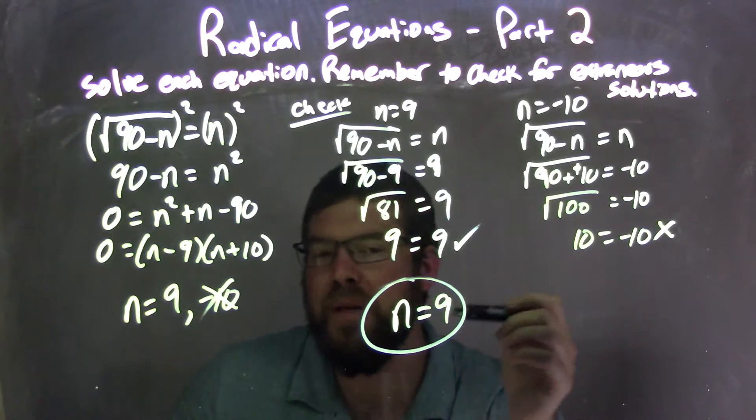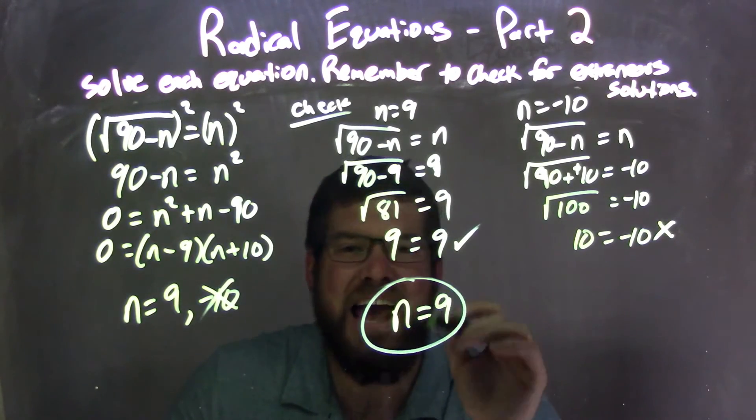One's positive, one's negative. And so our only real answer, finally, is n equals 9.